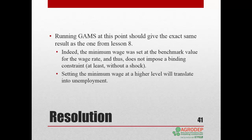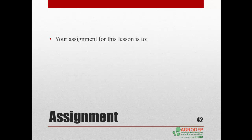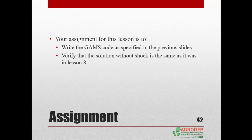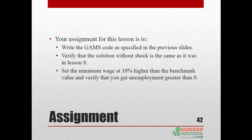As a simulation, we could set the minimum wage at a higher level, which should translate into unemployment. For your assignment: write the GAMS code as specified in the previous slides, verify that the solution without shock is the same as in Lesson 8, set the minimum wage 10 percent higher than the benchmark value, and verify that you get unemployment greater than zero. This concludes Lesson 10 and the GAMS training.